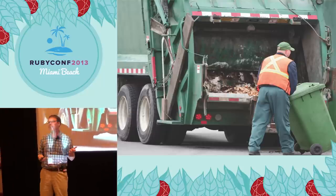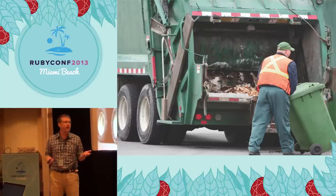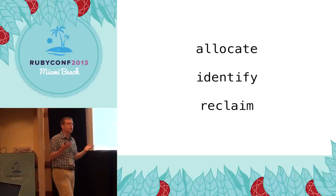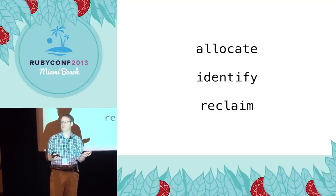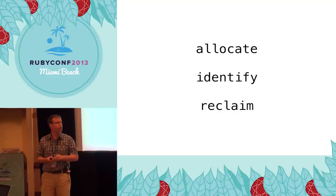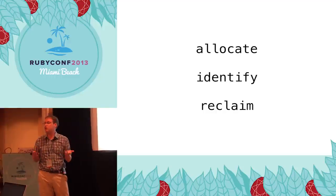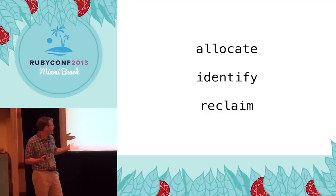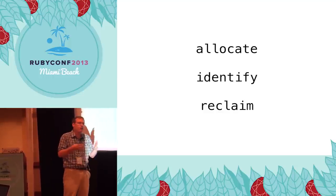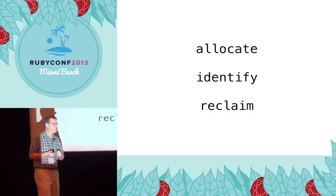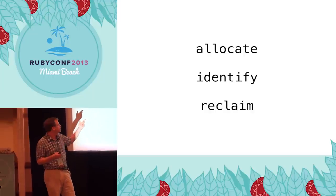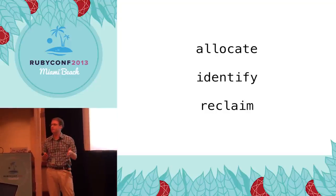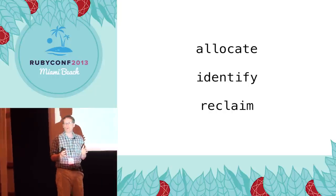The name garbage collection is a little bit of a misnomer. Garbage collectors don't just collect garbage — they do three things: they allocate memory for new objects, they identify garbage objects by figuring out which ones you're actually using and which ones you're not, and then they reclaim memory from those garbage objects. It makes perfect sense that garbage collectors both allocate and reclaim memory — it's two sides of the same coin.